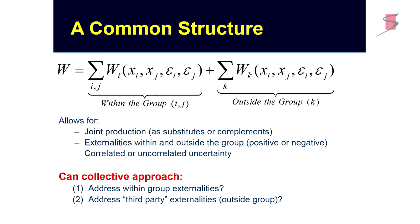This structure allows for joint production — whether substitutes or complements, and the literature gives examples of both — externalities both within and outside of the group, and uncertainty, potentially correlated or uncorrelated. The question is whether a collective approach can address the within-group externalities and whether it can effectively address the externalities outside of the group.